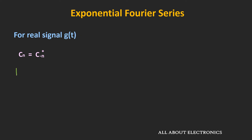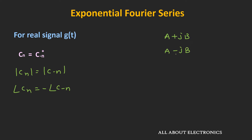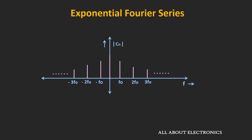Since Cn and C−n are complex conjugates, they have the same amplitude but opposite phase. For example, the complex conjugate of A+jB is A−jB; both have amplitude √(A²+B²), but their phases are opposite. Therefore, if we plot the magnitude of Cn at different frequencies, it will be an even function; if we plot the phase at different frequencies, it will be an odd function. This symmetry is only valid when the signal g is a real signal.